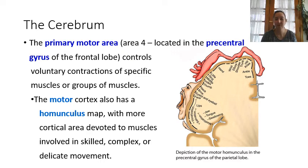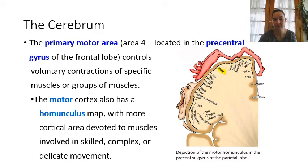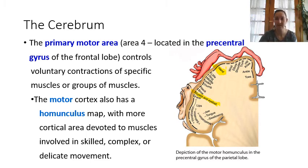Similarly, we have a motor homunculus, which maps onto the primary motor cortex in the pre-central gyrus. This shows where motor control for different parts of the body originates — for example, hand muscles are controlled from one specific region, and eyelid movement from another. It represents the motor signals associated with each particular area of the body.